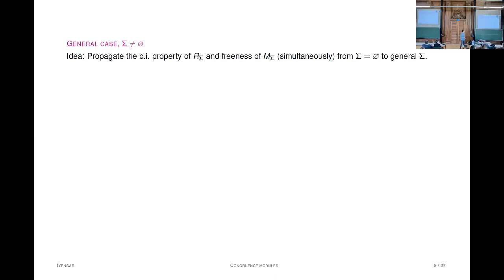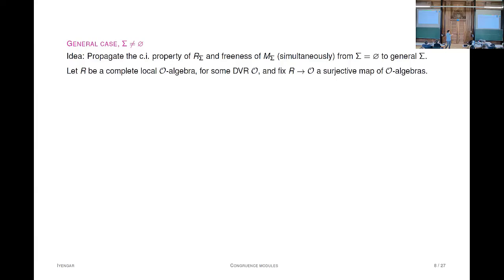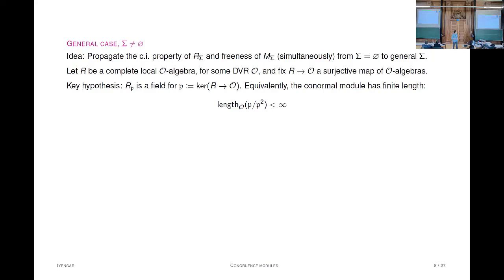In the general case, you care about freeness, but somehow they're only able to carry both freeness and the CI property of the ring together. You're going from the minimal to the non-minimal case, propagating the complete intersection and freeness property. To this end, Wiles introduces an invariant. We have a complete local O-algebra, O is a DVR, and you fix an augmentation—a surjective map to O.